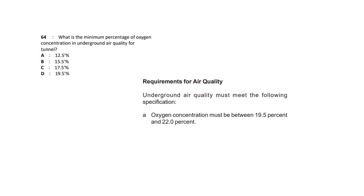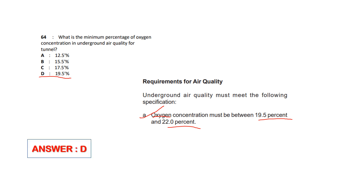What is the minimum percentage of oxygen concentration in underground air quality for a tunnel? The concentration of oxygen should be between 19.5% to 22%. The minimum percentage is 19.5%. Answer option D is 19.5%.